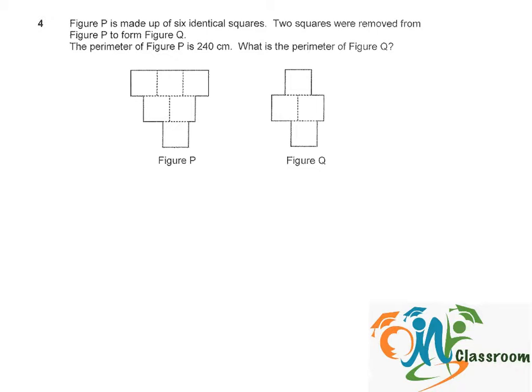As we go around the outline of Figure P, we can calculate how many square sides the perimeter is made up of. So we start from here. This will be 1, 2, 3, 4, 5, 6, 7, 8, and 9.